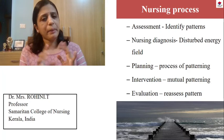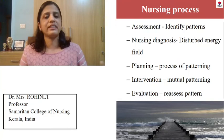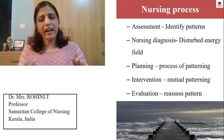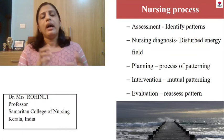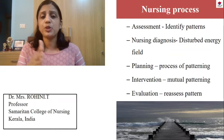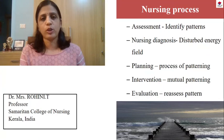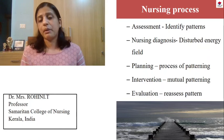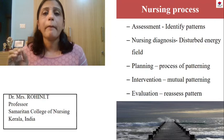How to write the nursing process? Assessment — identify the pattern of the energy field. Nursing diagnosis — please write 'disturbed energy field'; that is the nursing diagnosis according to Rogers' theory. Planning — plan how to pattern it properly. Intervention — mutual patterning like counseling, therapeutic touch, and guided imagery. Evaluation — reassess to see whether the energy field has returned to normal. The key takeaway from the nursing process: the nursing diagnosis is 'disturbed energy field,' and in all other areas, remember to use the word 'pattern.'